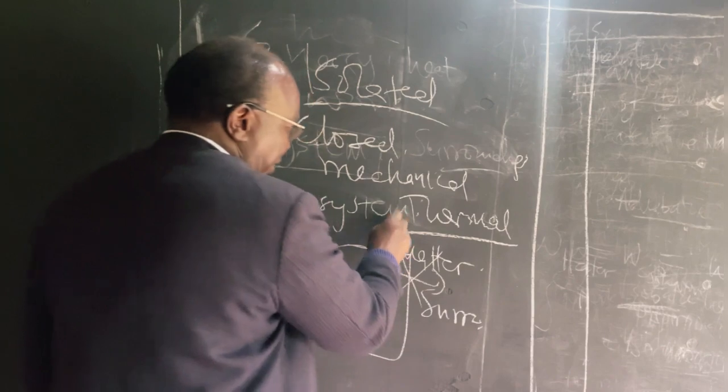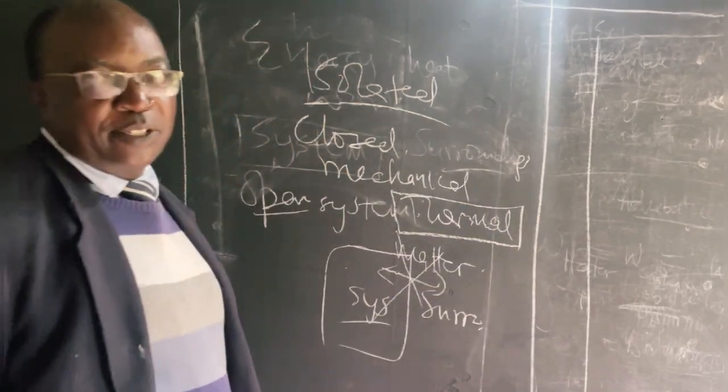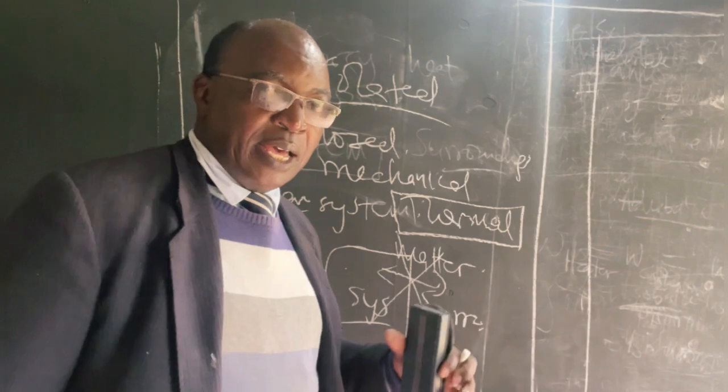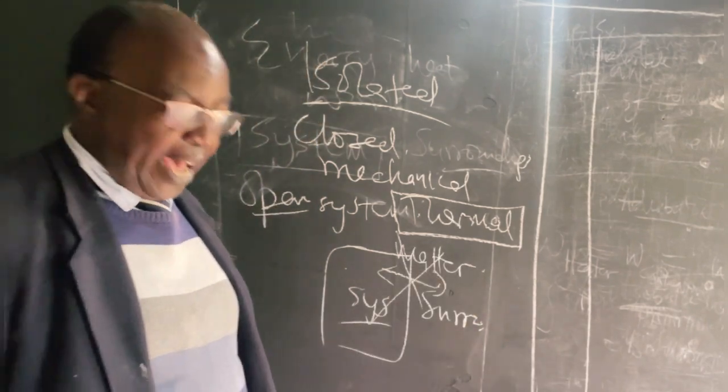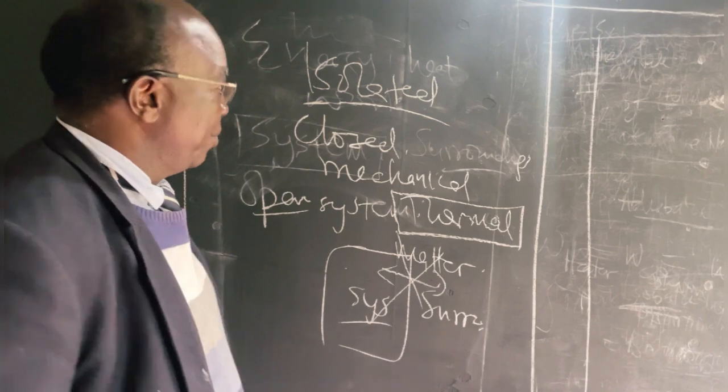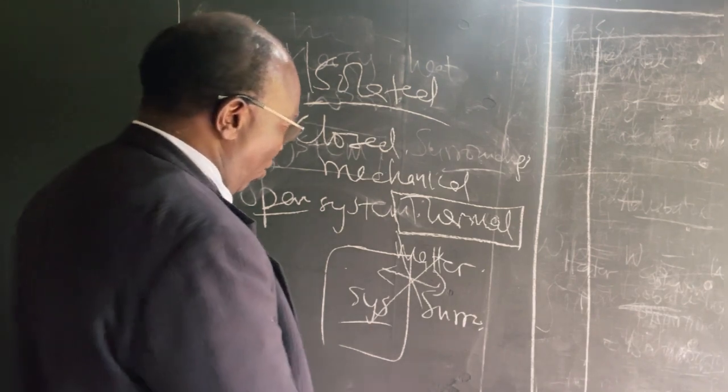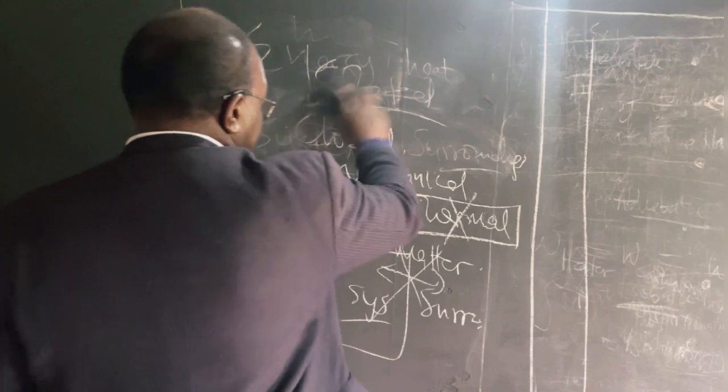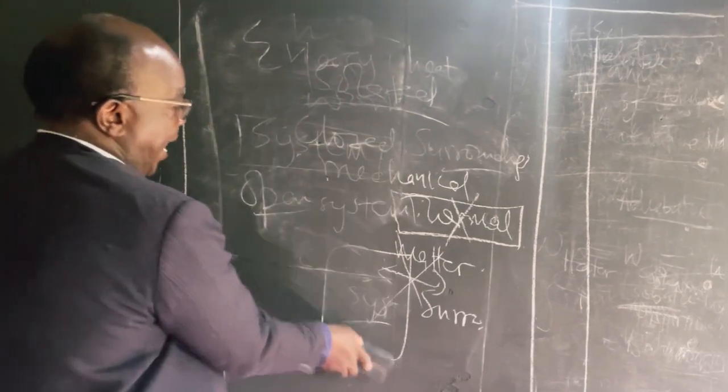So when you see the word thermal, temperature comes to your mind. So that means that heat cannot be transferred between the system and its surroundings. And in thermodynamics, when this heat can't be transferred between the system and the surroundings, we refer to that system as being adiabatic.